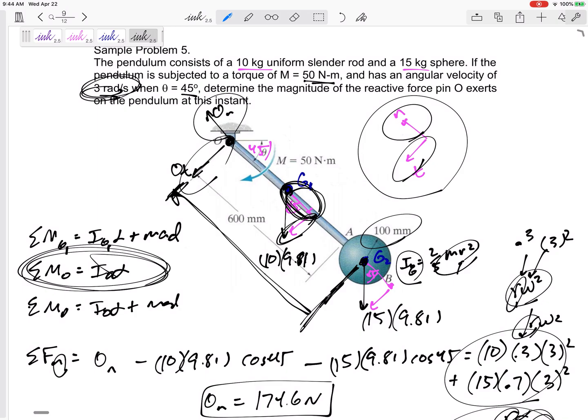It might be translation XY, it might be rotation, right? Normal tangential. This one was rotation.